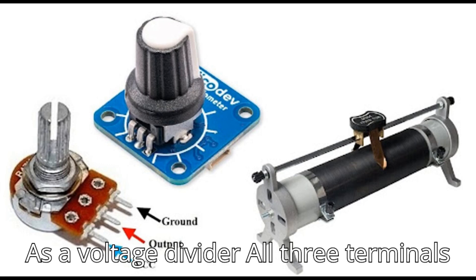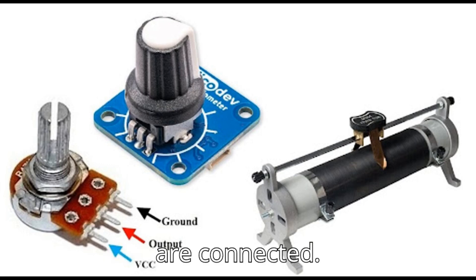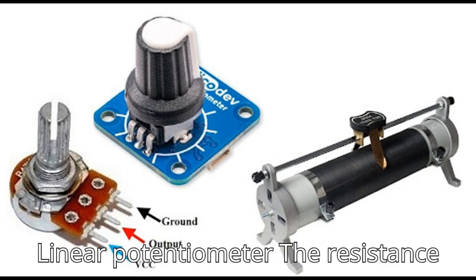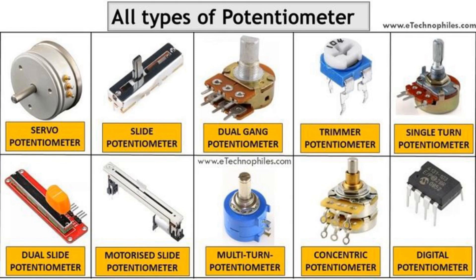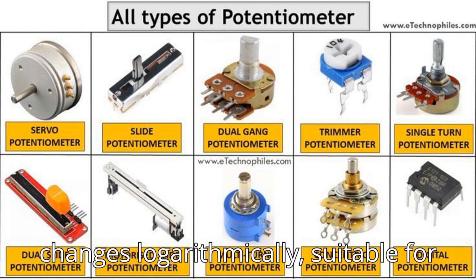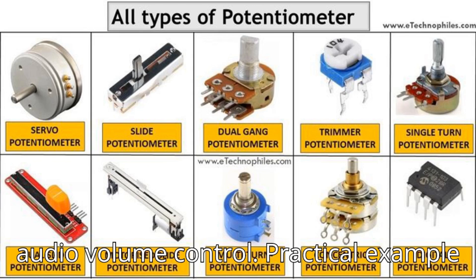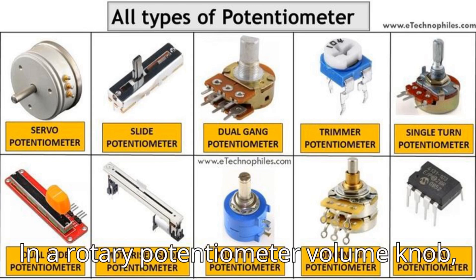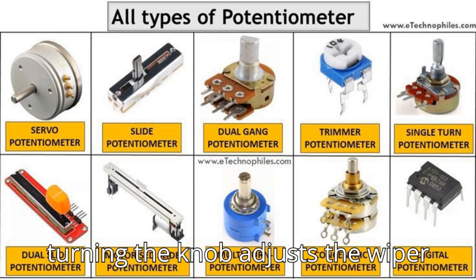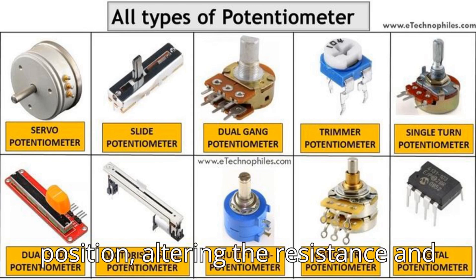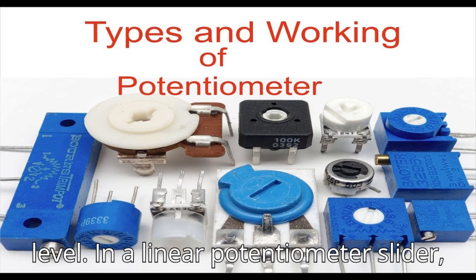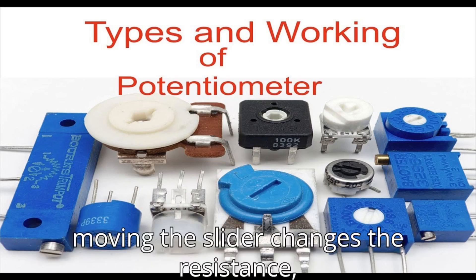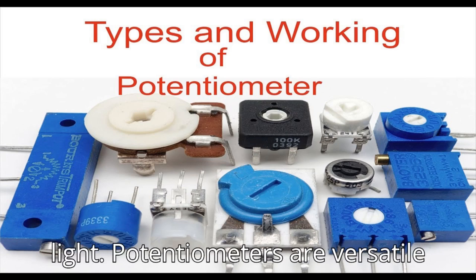Second, as a voltage divider: all three terminals are connected. Key points of operation include the linear potentiometer, where resistance changes linearly with wiper position, and the logarithmic potentiometer, where resistance changes logarithmically, suitable for audio volume control. In a rotary potentiometer, turning the volume knob adjusts the wiper position, altering the resistance and controlling the output signal. In a linear potentiometer, moving the slider changes the resistance, such as controlling the brightness of a light.